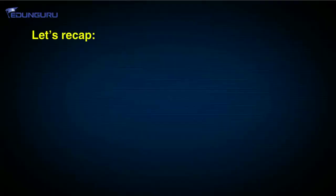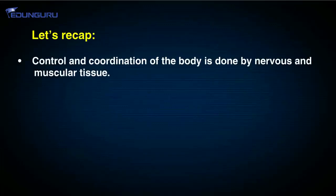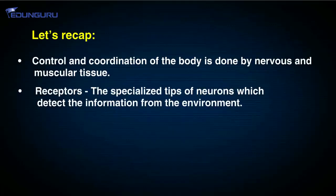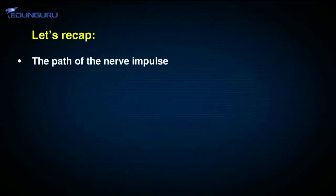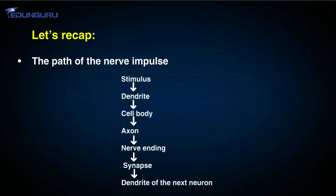So my dear students, revise it properly and do the questions. Now let us summarize all the important points. Control and coordination of the body is done by nervous and muscular tissue. Receptors are the specialized tips of neurons which detect information from the environment. The path of the nerve impulse is as follows: the stimulus received by the dendrite goes to the cell body, then to the axon, then to the nerve ending and the synapse, and then to the dendrite of the next neuron.